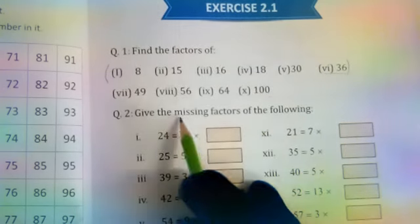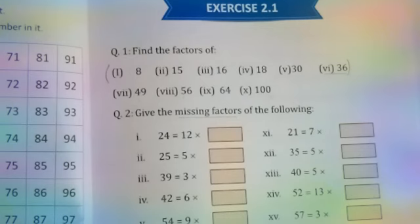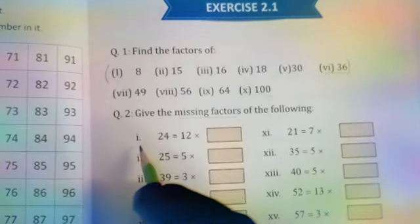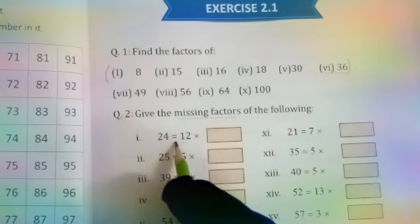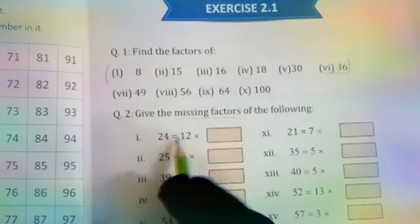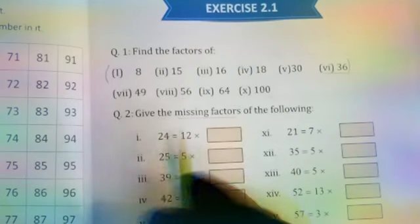Missing factors - we have to tell in this question which are the missing factors. Let's start from part number 1. 24 equality sign - you have studied in prep 6, book 1 about the equal sign. 12 multiply box.